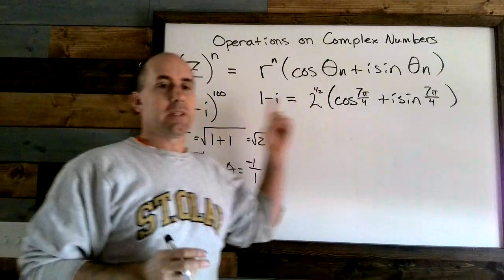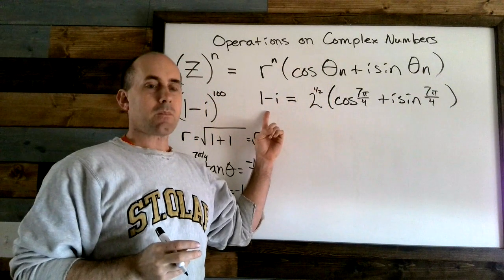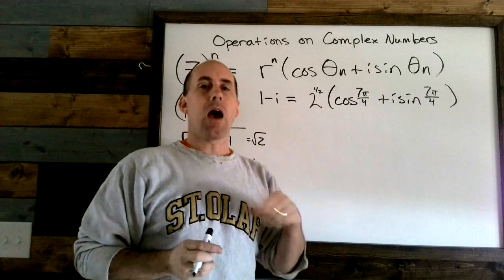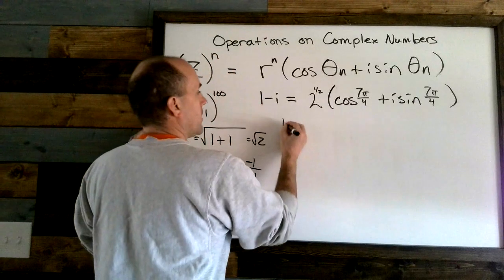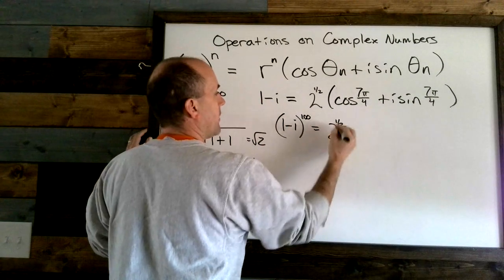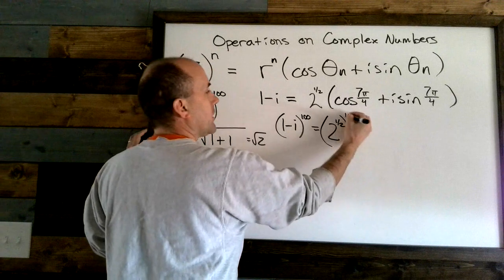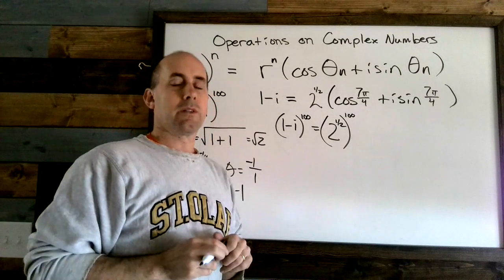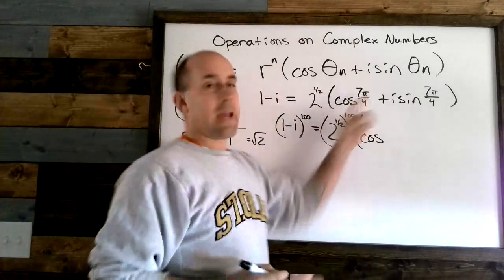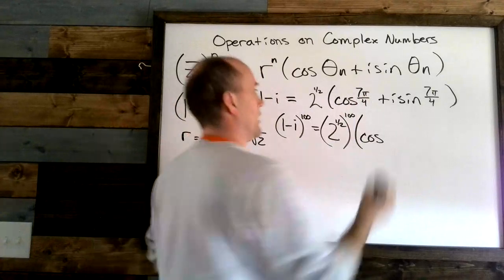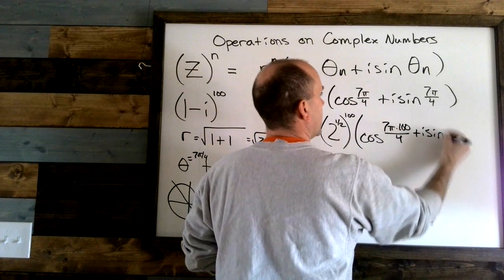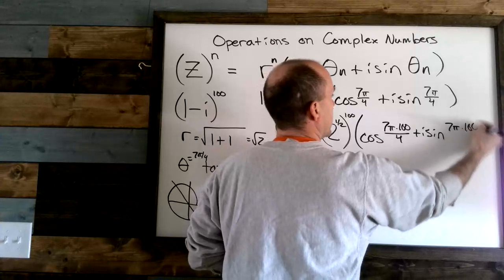The first step was to transform from complex form into trigonometric form. Now let's apply the power. (1 − i)^100 becomes 2^(1/2) raised to the 100th power, times cosine of (7π × 100)/4, plus i sine of (7π × 100)/4.